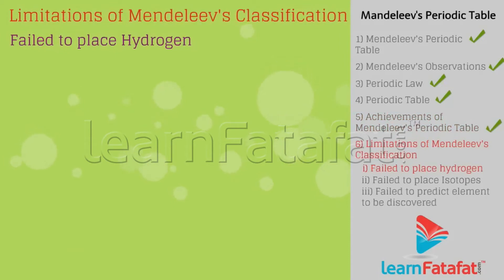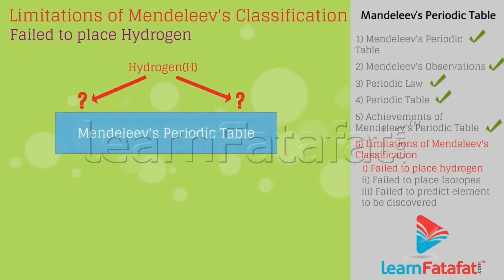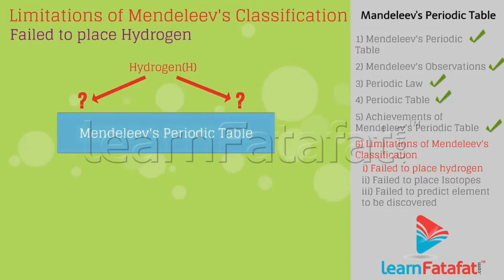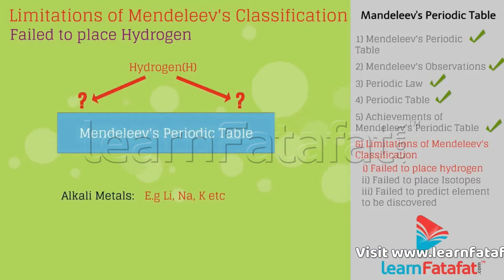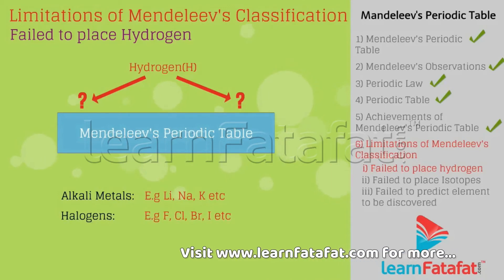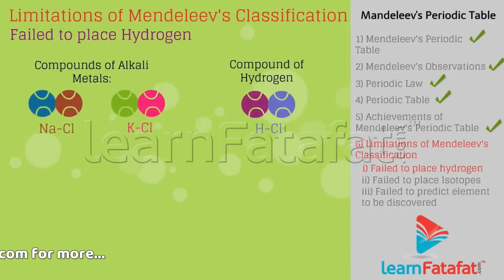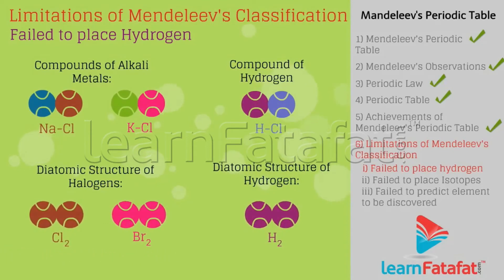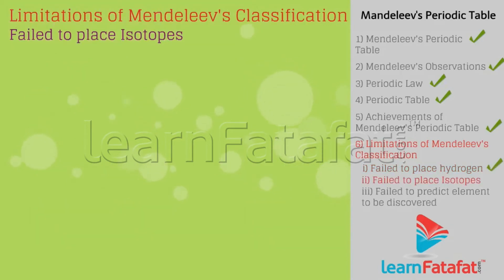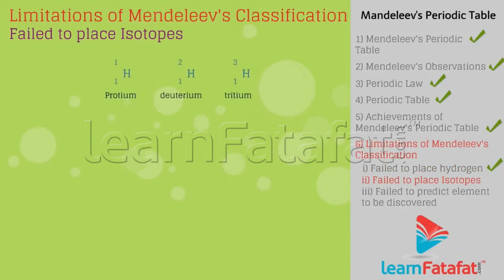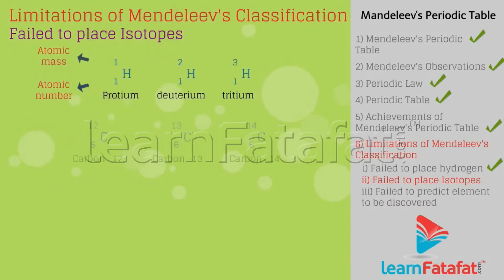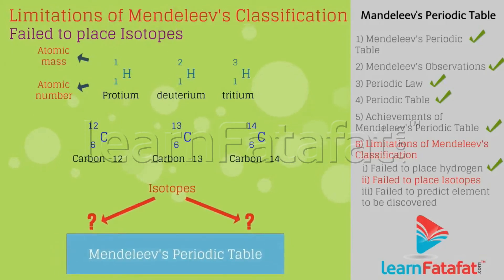Limitations of Mendeleev's classification — Failed to classify hydrogen: Mendeleev's classification failed to classify hydrogen because hydrogen fulfills the properties of alkali metals as well as halogens. For example, it forms compounds like alkali metals and also exists as diatomic like halogens. Failed to classify isotopes: elements that have the same atomic number but different mass number are called isotopes; Mendeleev's periodic table failed to place these isotopes.